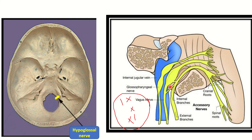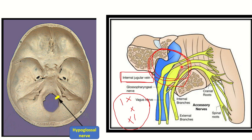Another large structure also passes through the jugular foramen — this is the internal jugular vein. The foramen is named after this vein. The jugular foramen is very important for studying skull base foramina because cranial nerves 9, 10, and 11 — glossopharyngeal, vagus, and accessory — pass through it, along with the internal jugular vein, which is the most important vein of the brain carrying almost all blood returning from the cranial cavity.